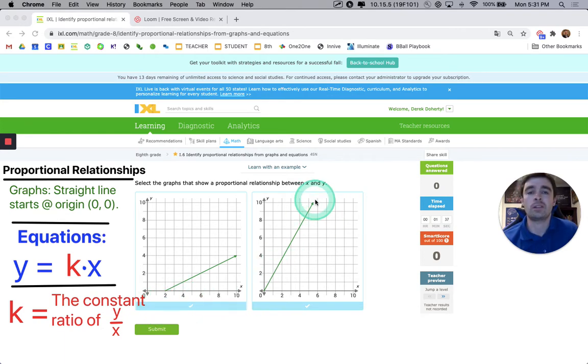But this other graph here, straight line, starts at the origin. So it's got the qualities we want. This is our only proportional graph out of the two here.